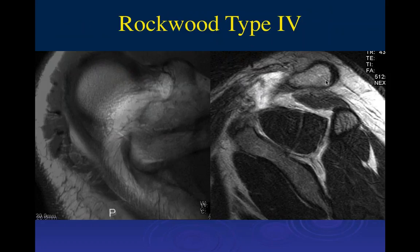This is a Rockwood Type 4 — an exceedingly uncommon injury that must be recognized because it is a surgical condition. Almost all Type 4s are operated on urgently, as soon as an operating room is available. These are high-force injuries, most commonly from falling on the shoulder — bicycles and motorcycles come to mind.